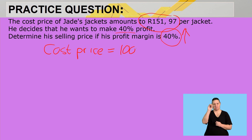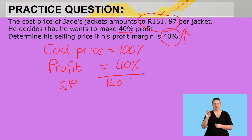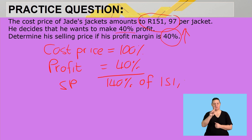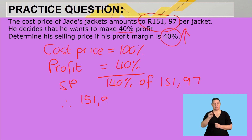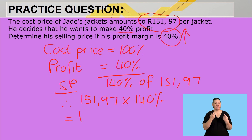Our profit is 40%. So now our selling price will be 140% of the cost price, which is R151.97. Therefore, we are going to say R151.97 times 140% to get the selling price.